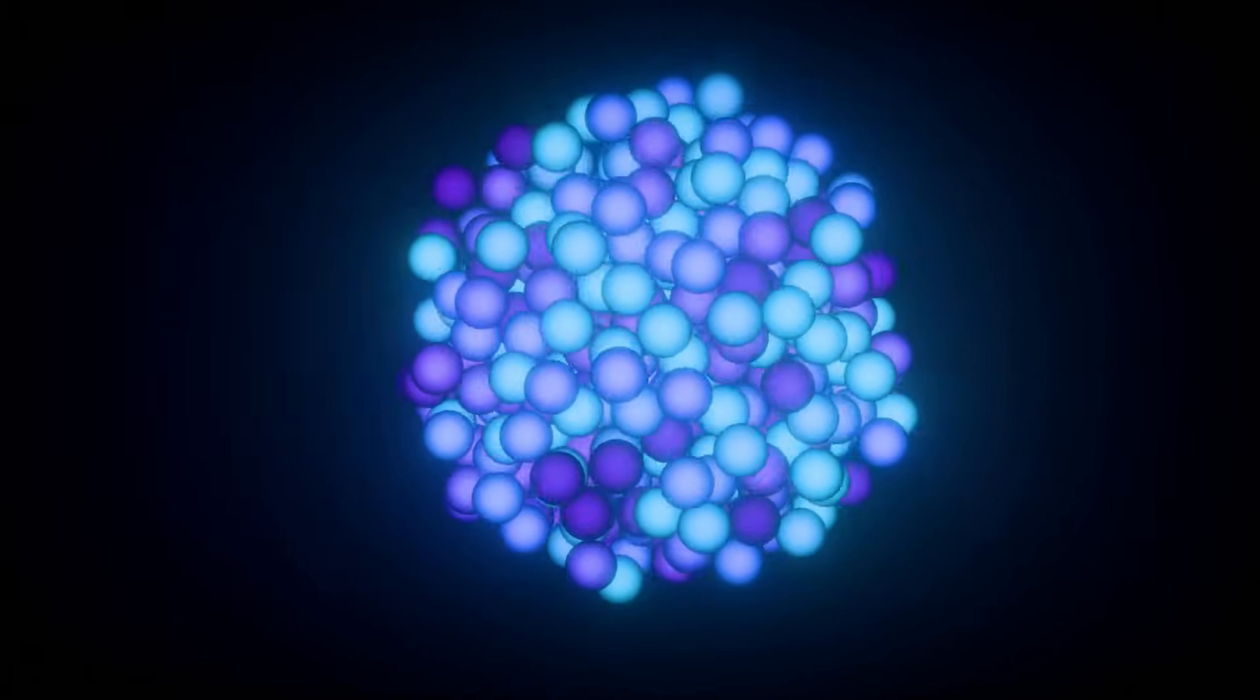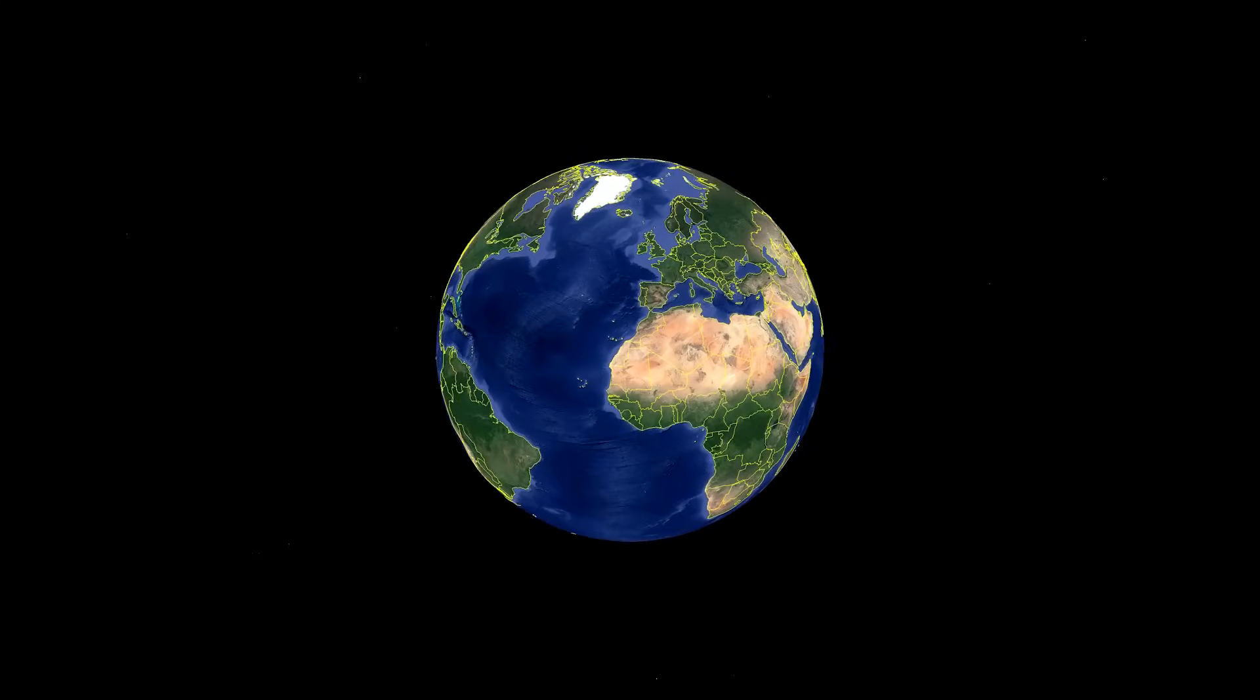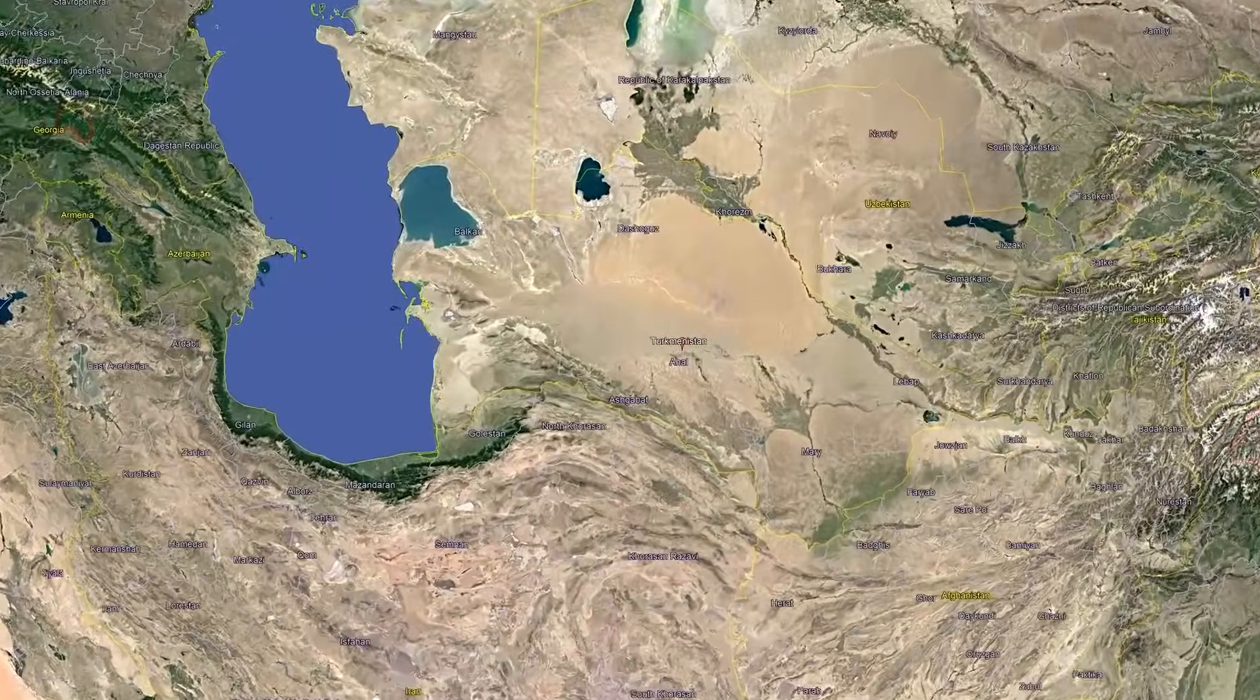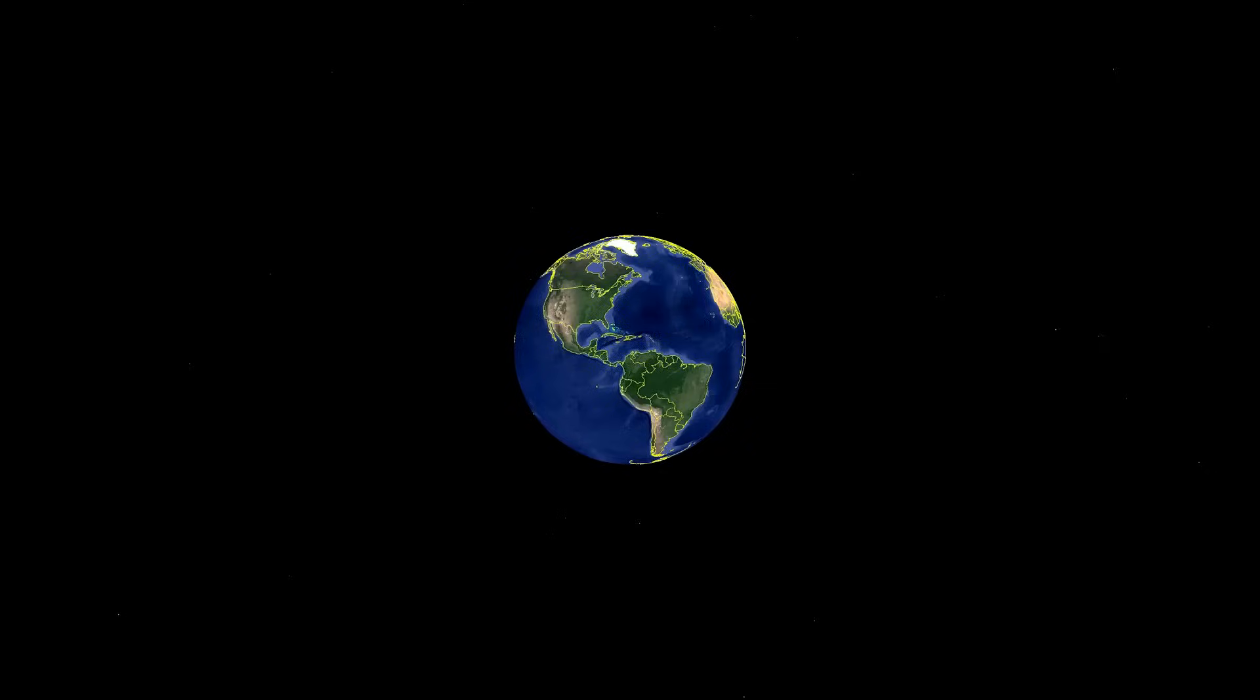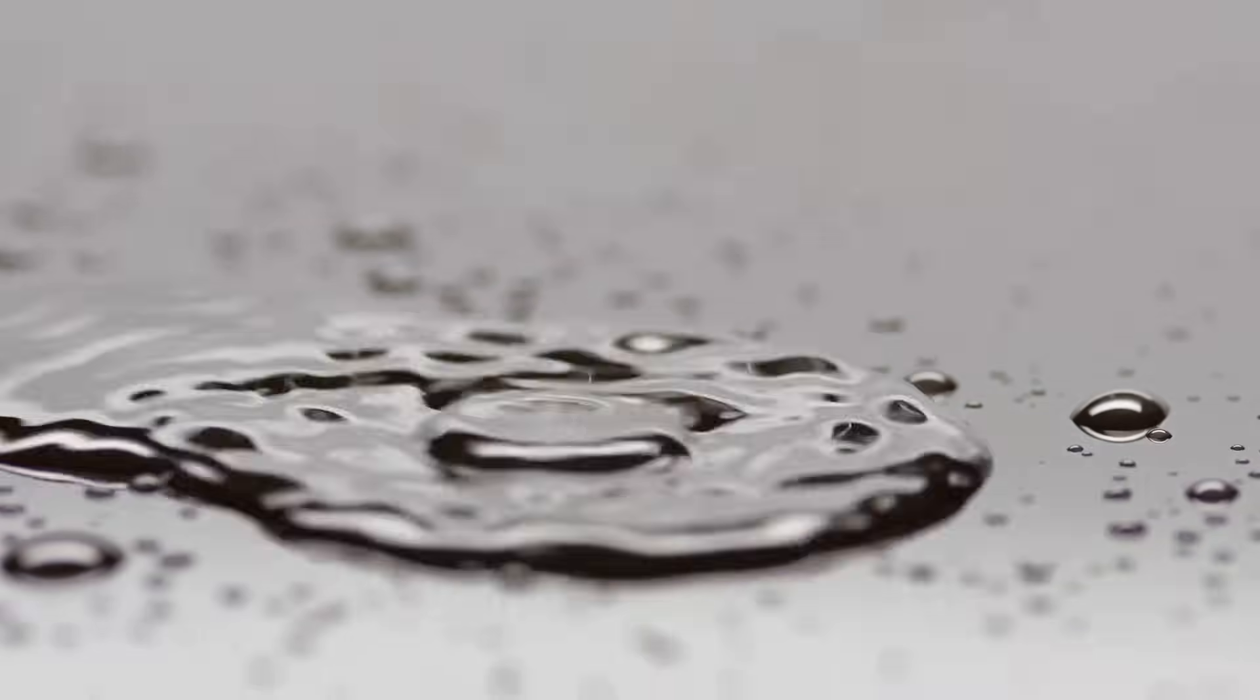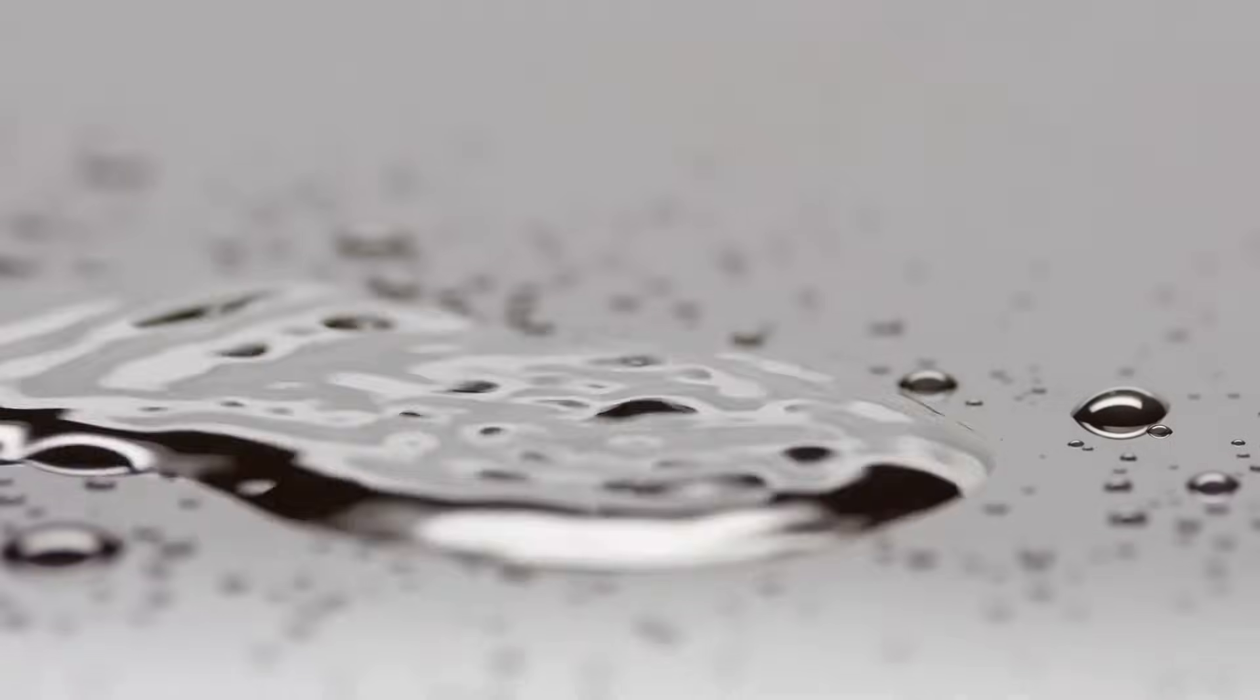We've said that atoms are small, but it's really hard to get your head around just how small they are. Imagine a single grapefruit. Now imagine you could blow that grapefruit up until it was the size of the entire planet Earth. If you could do that, a single atom inside that grapefruit would be about the size of a blueberry. Take a single drop of water. In that tiny drop, there are more water molecules, which are teams of atoms, than there are drops of water in all the oceans on Earth.